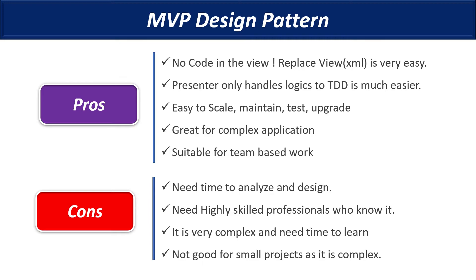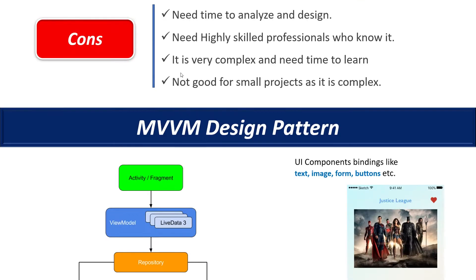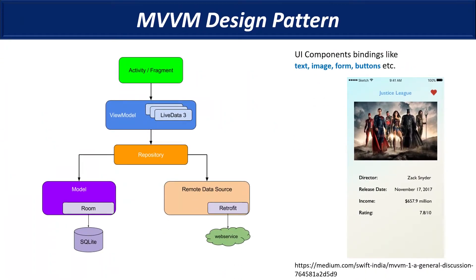MVP is one of the best design patterns for Android development — really clean and fast, and also recommended by Google developers. Now MVVM: the Activity or Fragment works as the View, the ViewModel holds the LiveData, and that LiveData comes from the Repository. The Repository can get information from a local database like Room or SQLite, or an online database like Firebase.